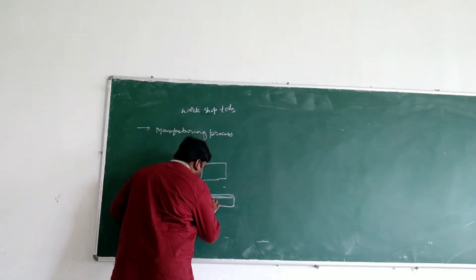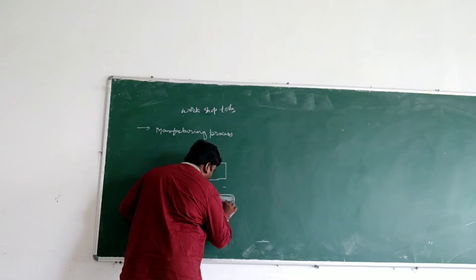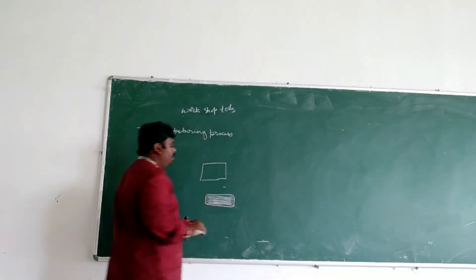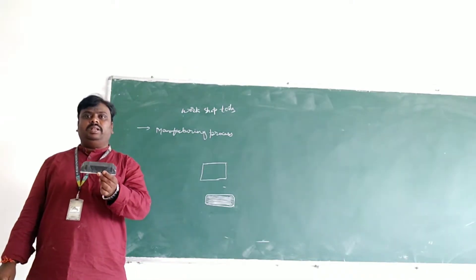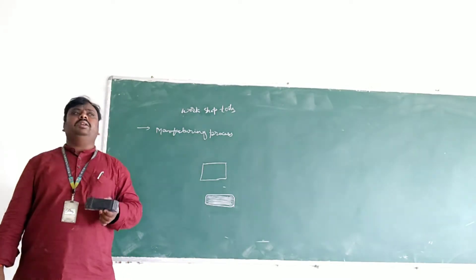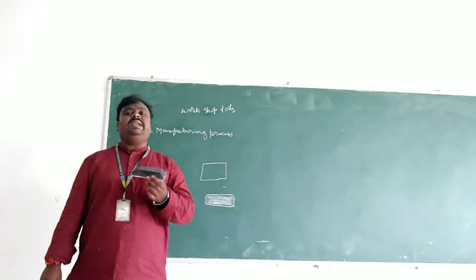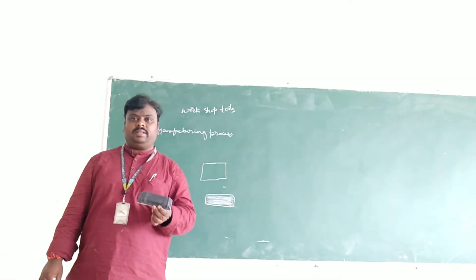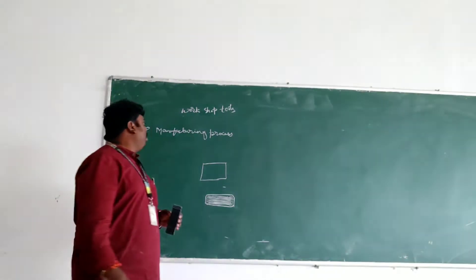Now we are going to use the forming of the rectangular shape. Number of ropes will be there in the application. Now we are going to be preparing the complete structure - that is called manufacturing process. So when you are thinking of the raw material, we can prepare the systemized methods. What are the methods we can do - that is called manufacturing process.